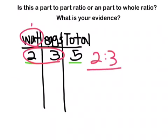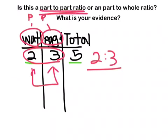it would be 2 to 3. So, this is a part. This is a part. So, what would be comparing this and this be? A part-to-part ratio! Yay!